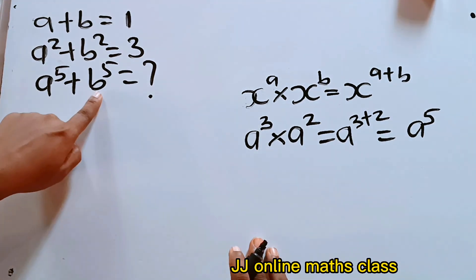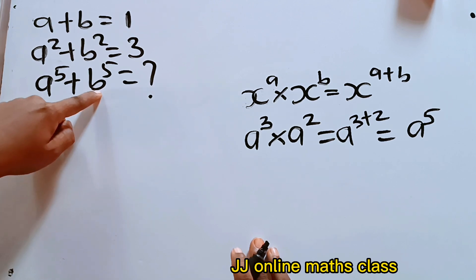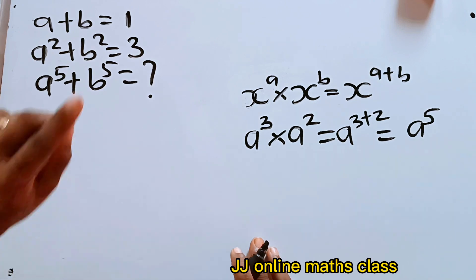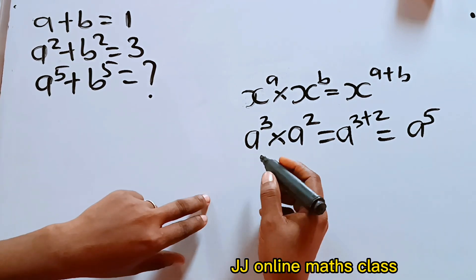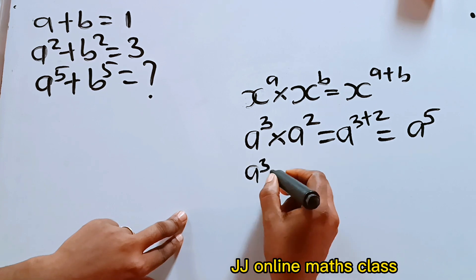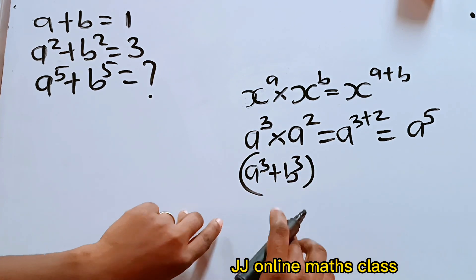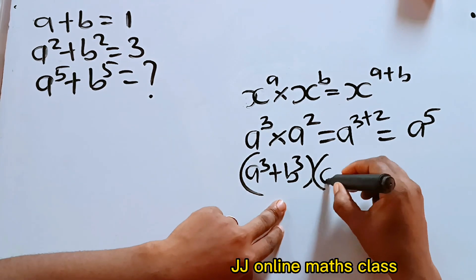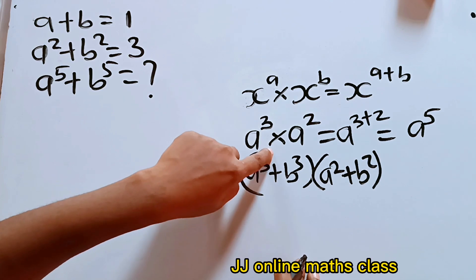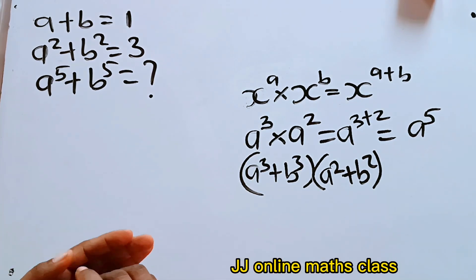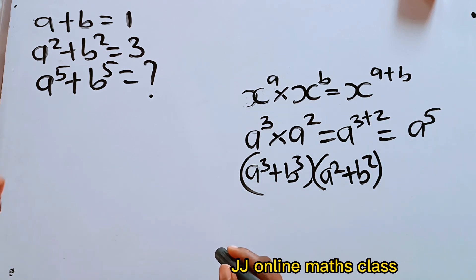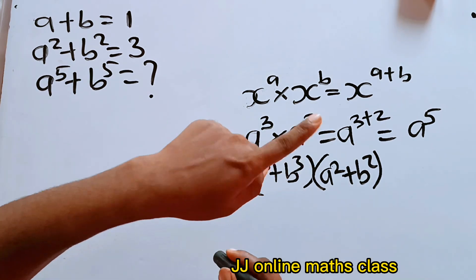The same thing goes for b. We need b to the power of 3 times b to the power of 2 to get b to the power of 5. That means we already have a squared plus b squared. We just need to get a to the power of 3 plus b to the power of 3, so that when we multiply it by a squared plus b squared, we will get a to the power of 5 and b to the power of 5.